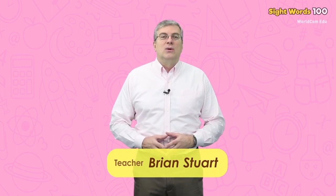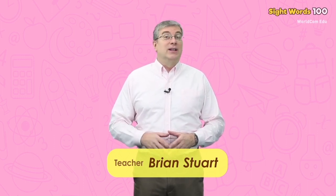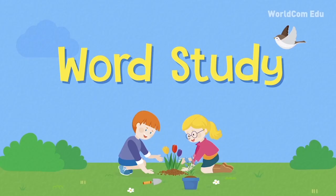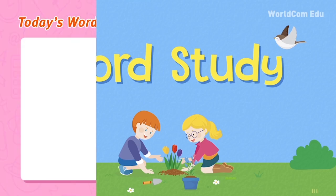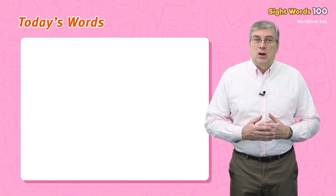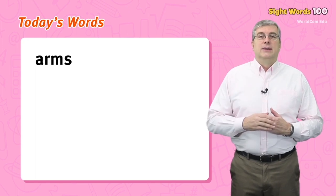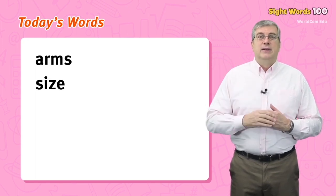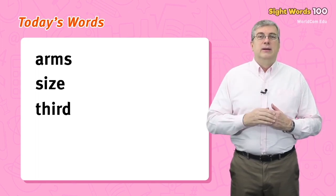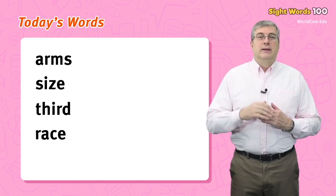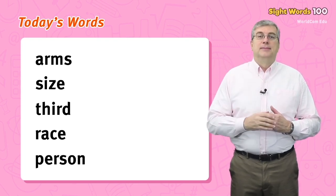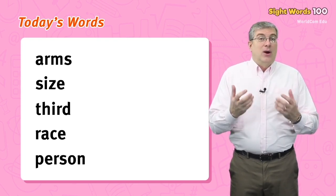Hello everybody, my name is Brian. Welcome to WorldCom Edu Sight Words Level 5. We are going to learn some easy words today. Are you ready? Let's begin. Today's words are: arms, size, third, race, person. Let's start with arms.